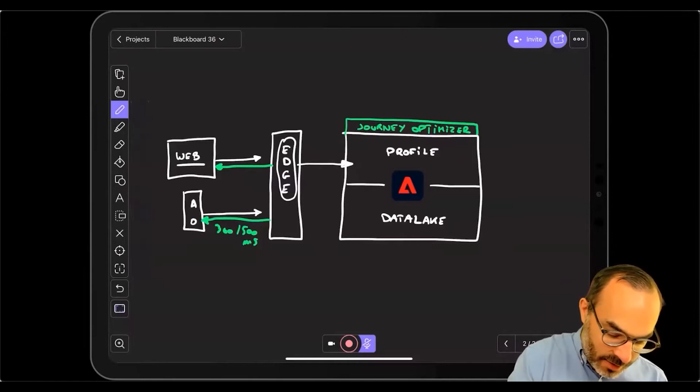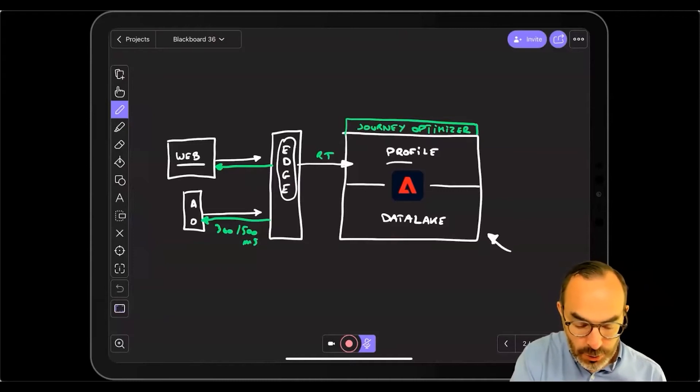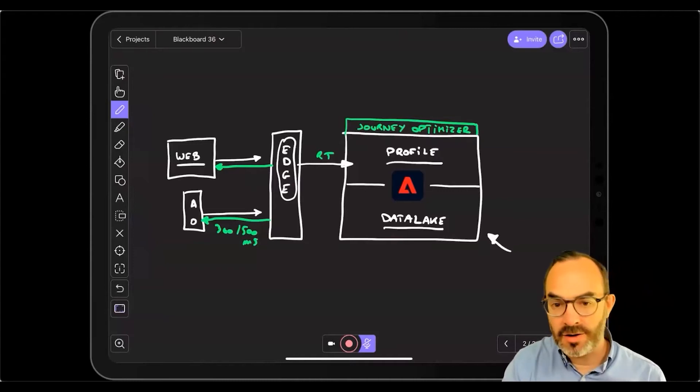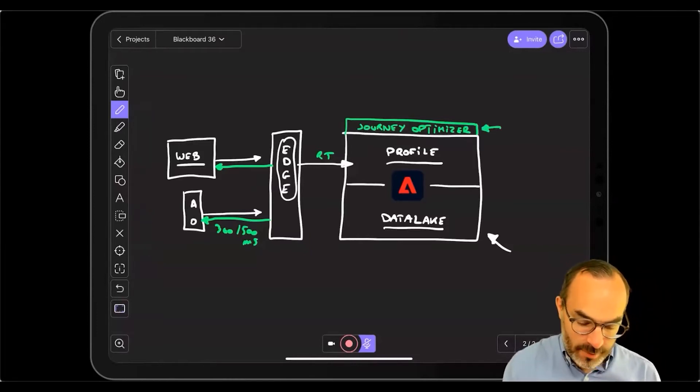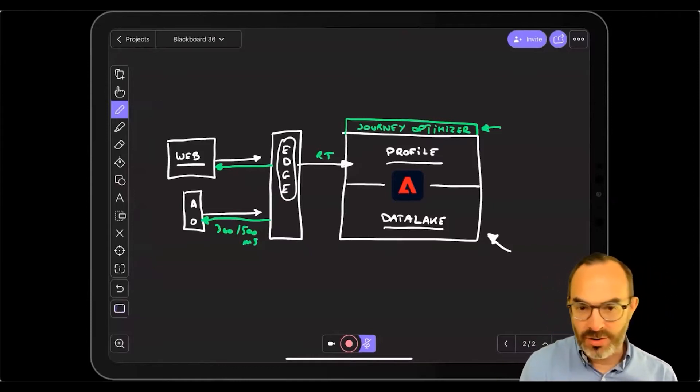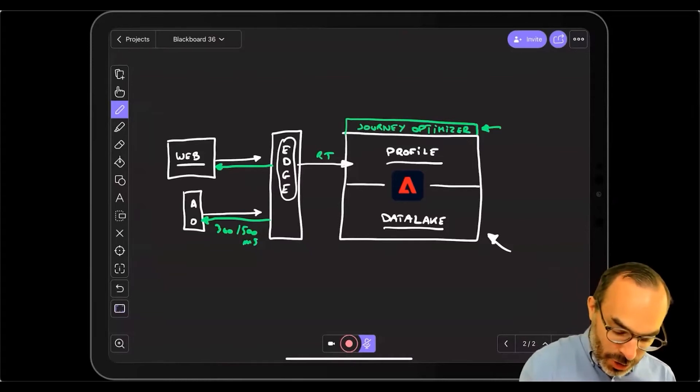Now the data gets sent from the edge into AEP itself, which is the box that I've drawn over here. That's Adobe Experience Platform. You've got two components in the platform. One is the profile and the other is the data lake. And on top of that combination of profile and data lake, we've basically built out Journey Optimizer. So the box over here, Journey Optimizer.